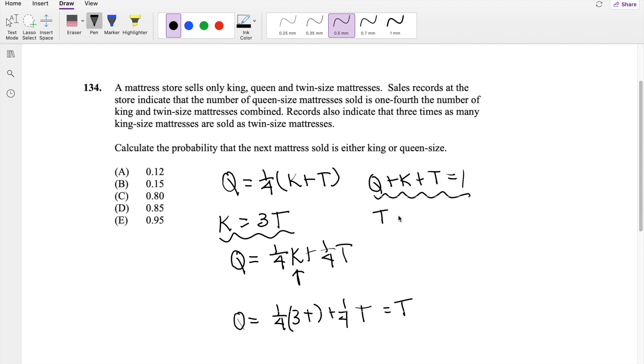So queen is just twin, king is three T, and twin is just twin, so this is equal to one. So then the probability of twin bed must be equal to, or five T is equal to one, so then probability of T must be equal to one-fifth.